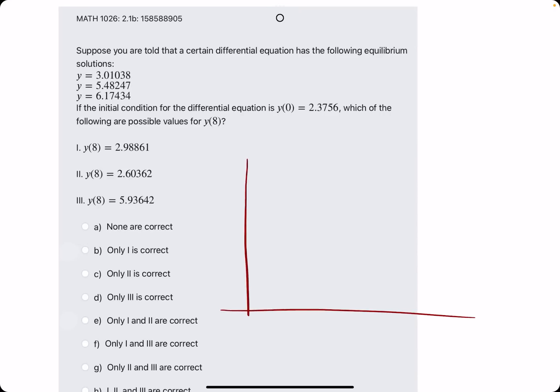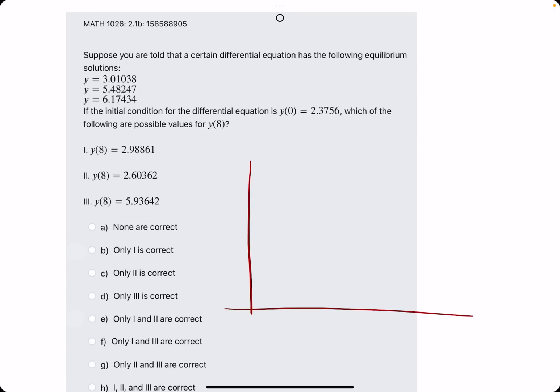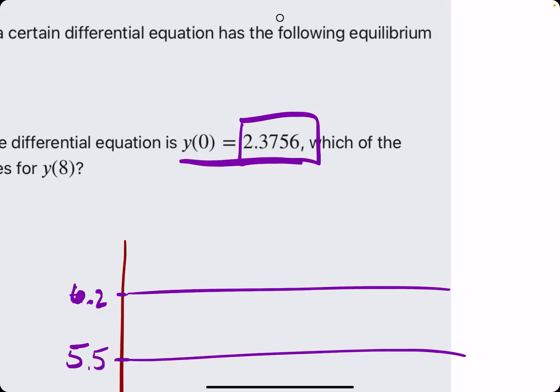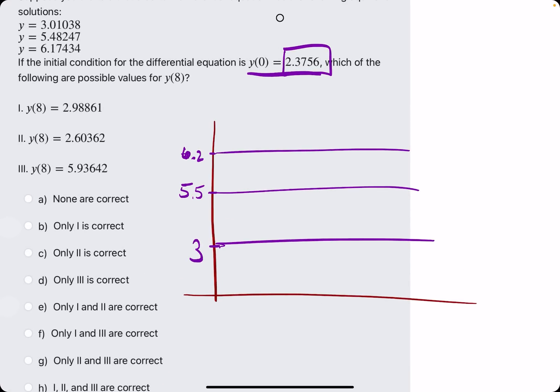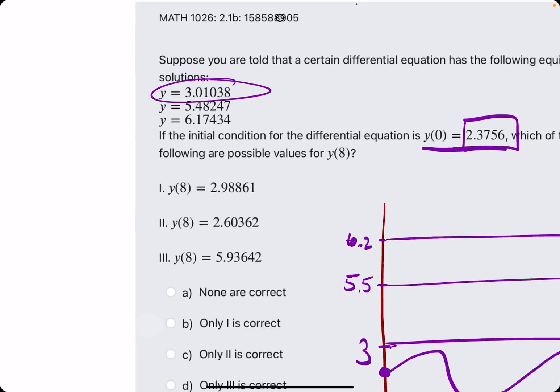All right, let's go ahead and do two more examples just for practice here. So we basically have 3, 5.5, and 6.2. So we're going to call it 3, 5.5, and 6.2. All right, so I'll just use horizontal lines to represent the equilibrium solutions. Then they tell us the initial condition is the y value at 2.3 something, so 2.4 basically, which is way down here. So really, as long as these y values are less than the 3 equilibrium solution, then we should be okay.